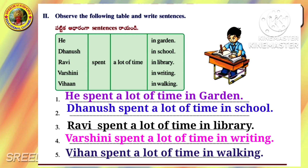APJ Abdul Kalam was born on 15 October 1931 in Rameswaram. He was a professor, author, and aerospace scientist, also known as the Missile Man of India. He was the 11th President of India, holding the position from 2002 to 2007. He was given the Bharat Ratna Award in 1997, the Padma Vibhushan in 1990, and the Padma Bhushan in 1981.